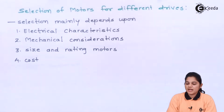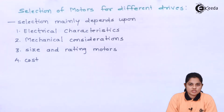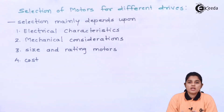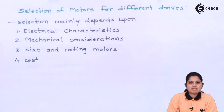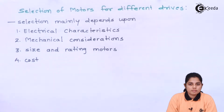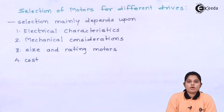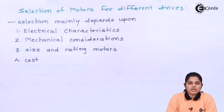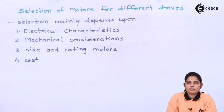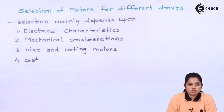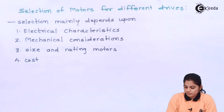Secondly, you have mechanical considerations. In mechanical consideration: noise level, whether the motor can be utilized in a vertical or horizontal manner, what kind of bearing is required, and what kind of enclosure is required. These are the mechanical considerations that need to be addressed.